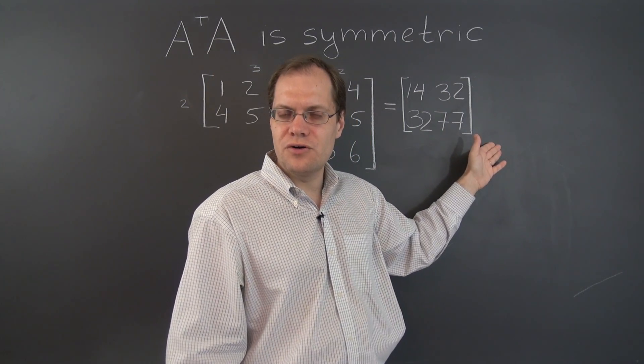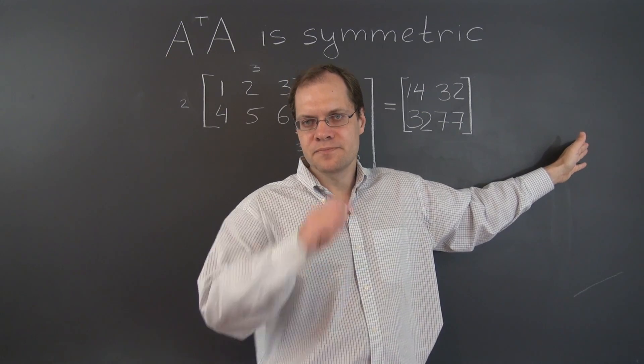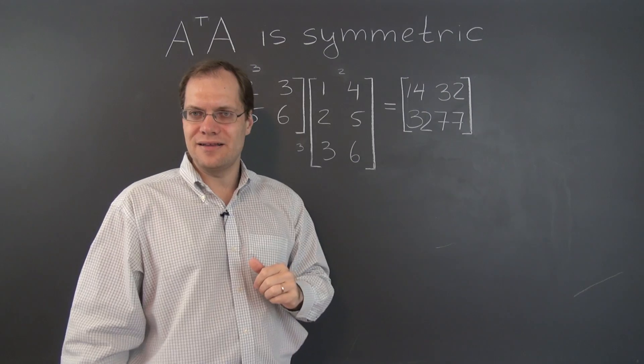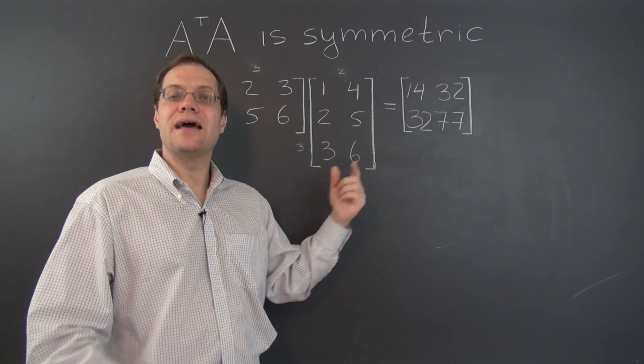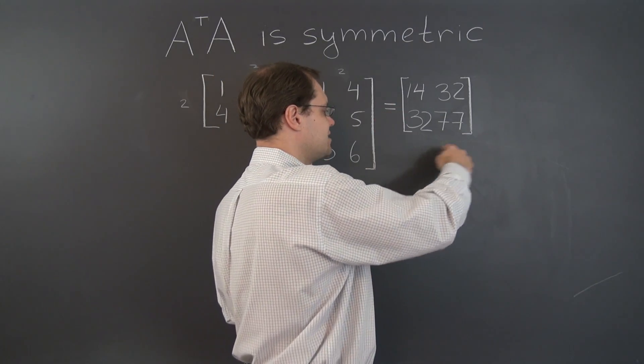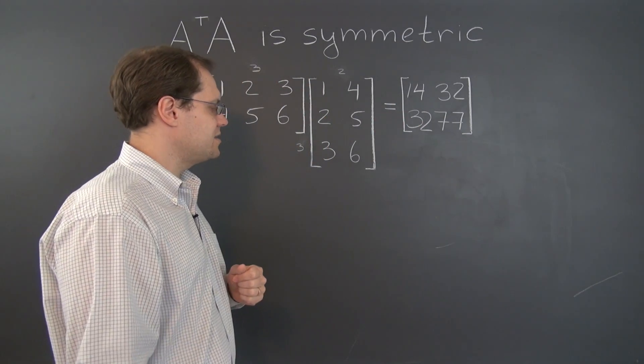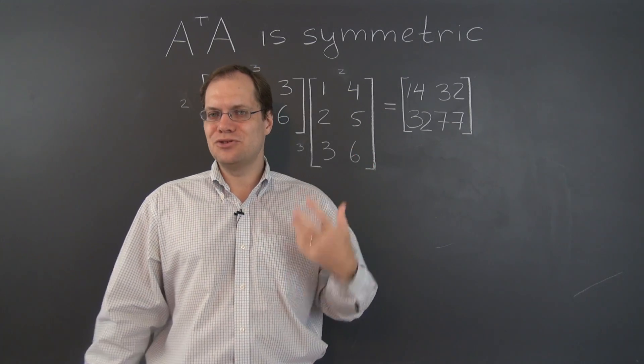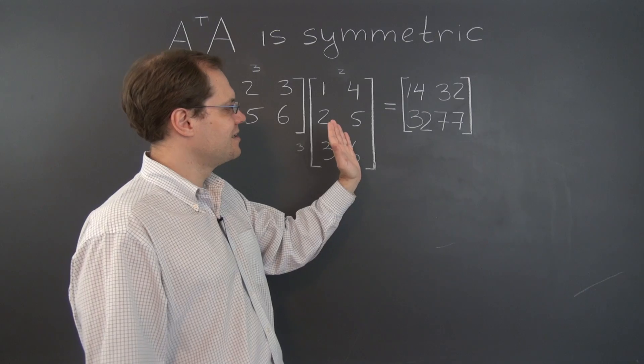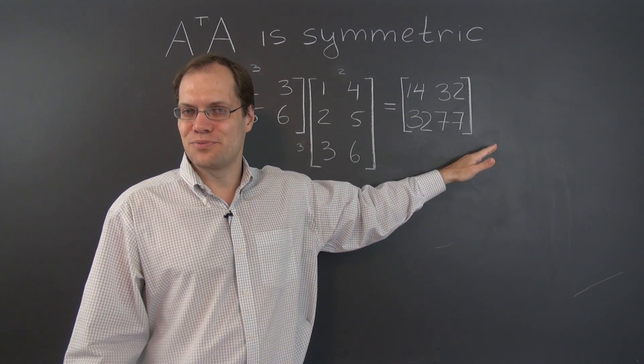And you can even say what the entry, let's say, in the fifth row and eighth column will be. It will be the dot product of the fifth column and the eighth column of this matrix. And it will therefore match the entry in the position 8-5 as opposed to 5-8 because it will be the dot product of the same two columns.